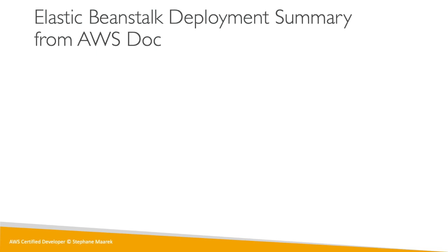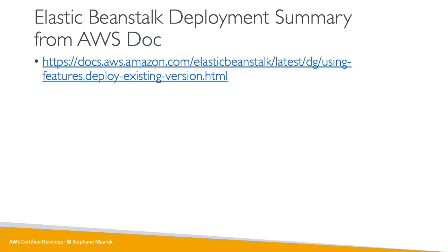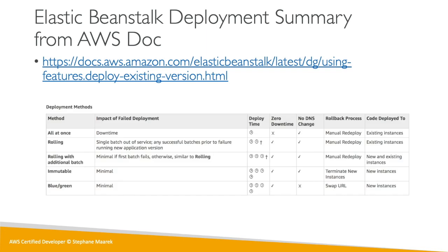From the AWS documentation there's a very good summary table covering all deployment options — All at Once, Rolling, Rolling with Additional Batch, Immutable, and Blue/Green — showing what happens on a failed deployment, deployment time, whether there's zero downtime, DNS changes, rollback process, and where code gets deployed. This table should make a lot of sense given the diagrams. The exam asks many questions around which deployment method is better depending on the use case and requirements.